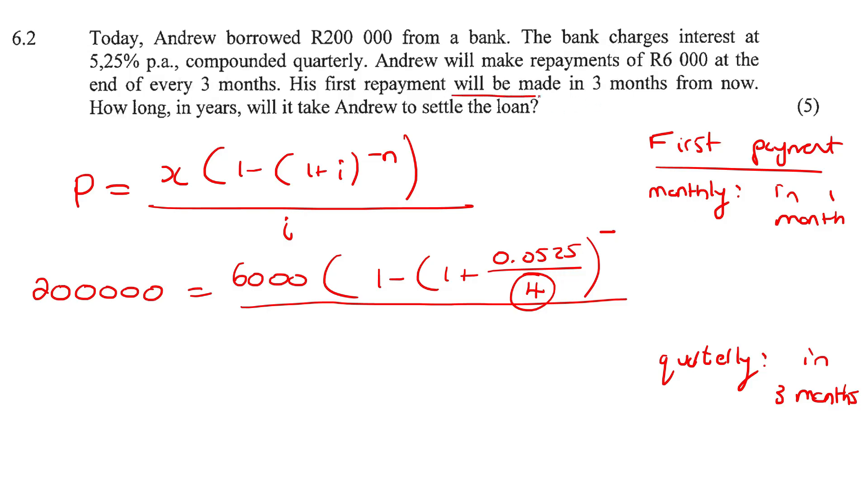And that is exactly what Andrew did. So everything in this question is perfect. So we can simply say four multiplied by the number of years, which is X. We don't need to subtract any payments or add any payments, because he is following the standard scenario for quarterly compounding.